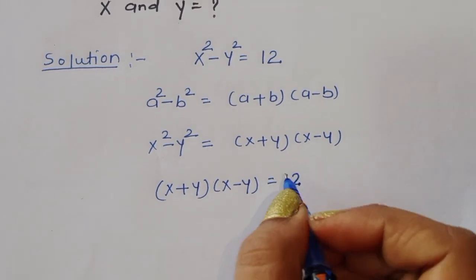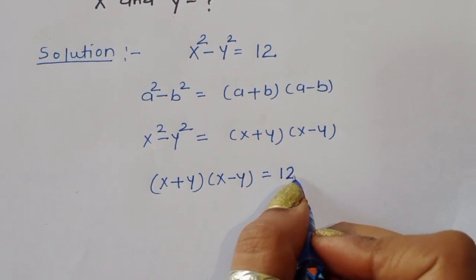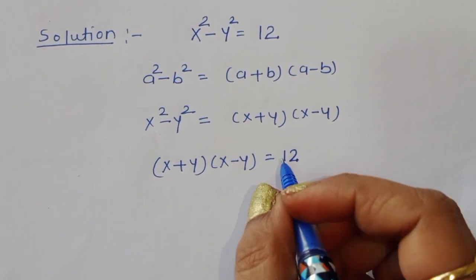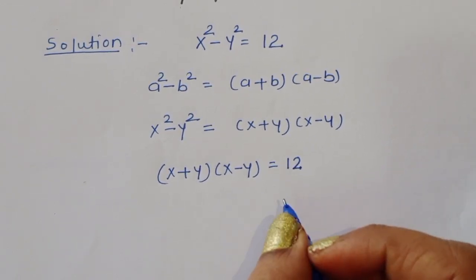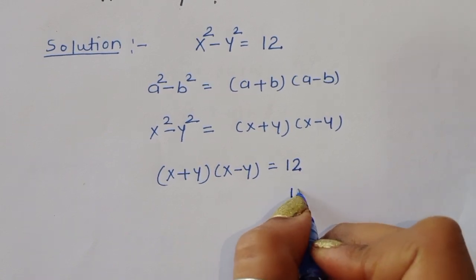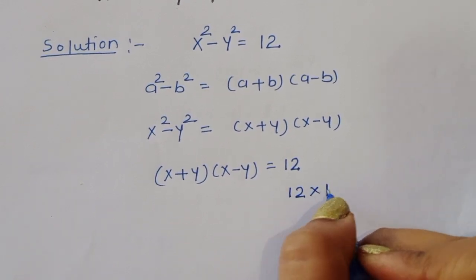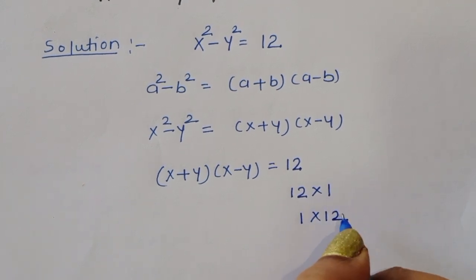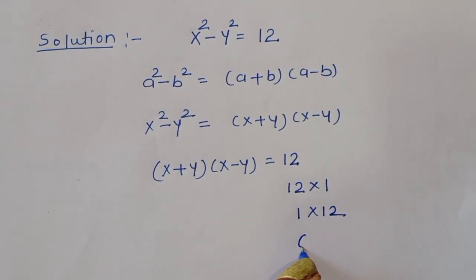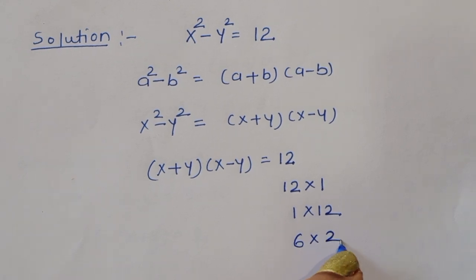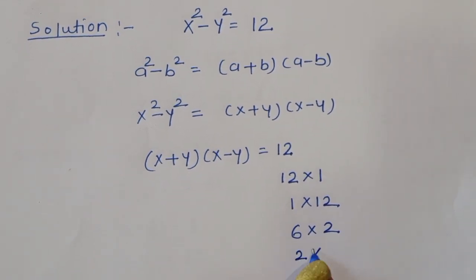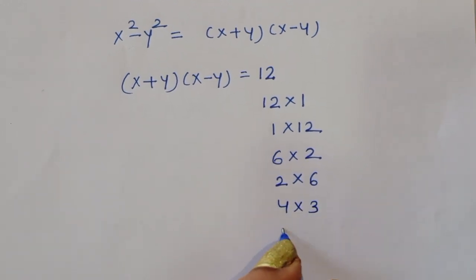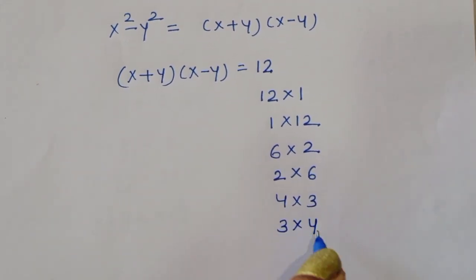Now we have to find the factors of 12. The factor pairs are: 12 × 1, 1 × 12, 6 × 2, 2 × 6, 4 × 3, and 3 × 4.